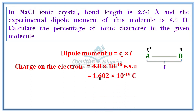In SI units, one electron charge is 1.602 × 10⁻¹⁹ coulombs. One unit charge separated by one angstrom gives us the unit dipole moment, which we can calculate using this method.